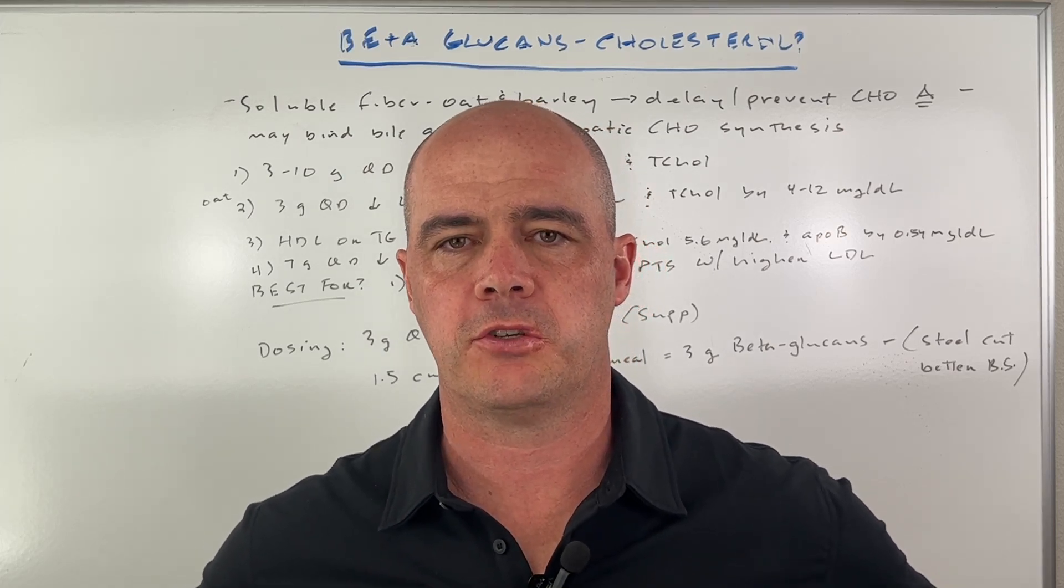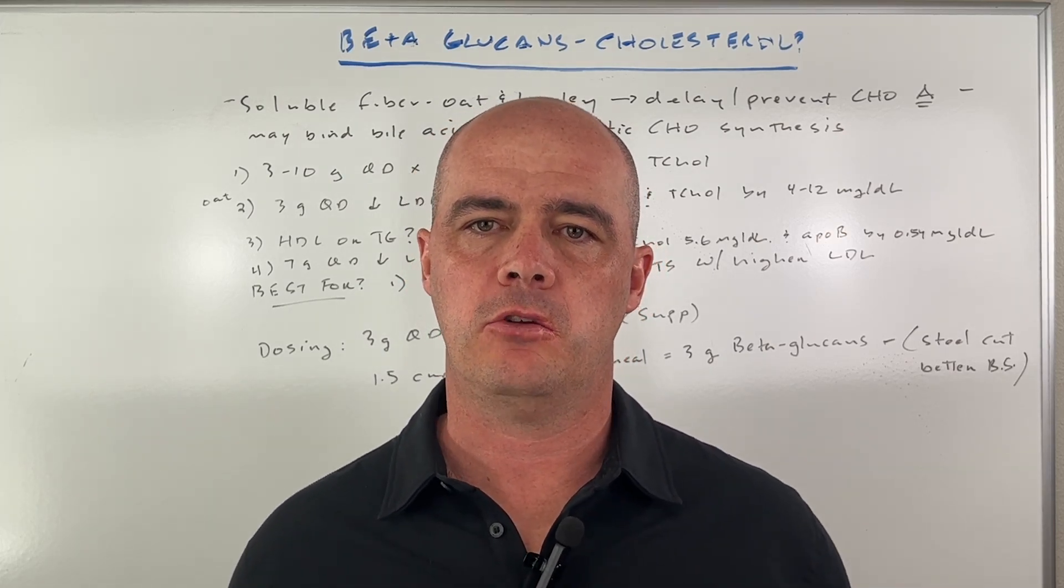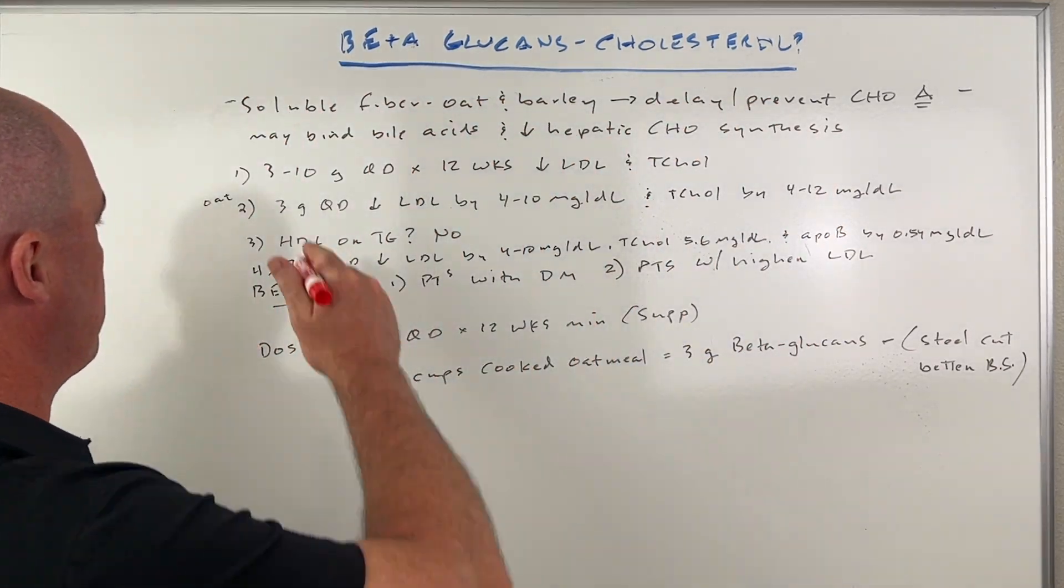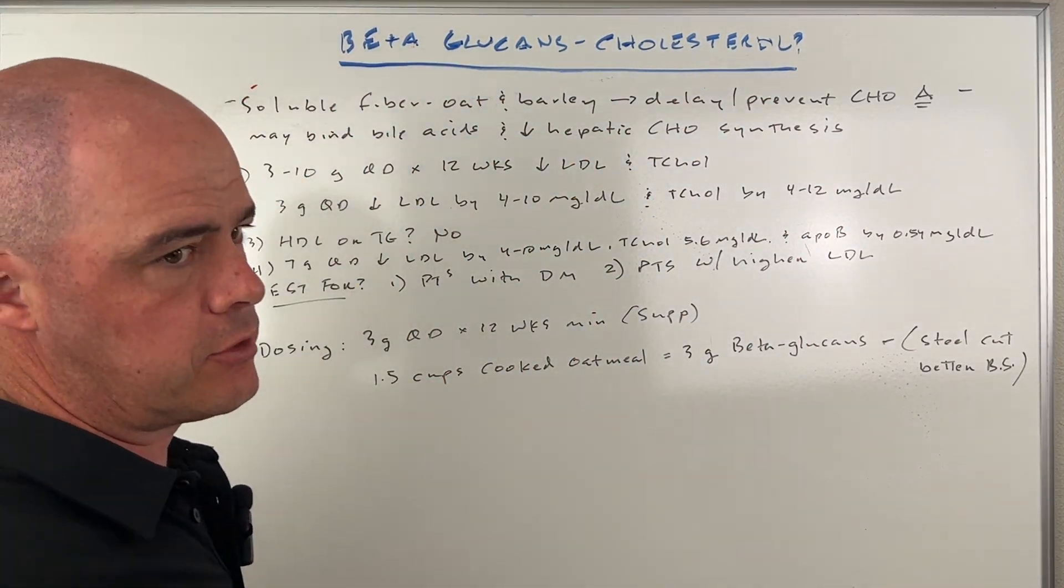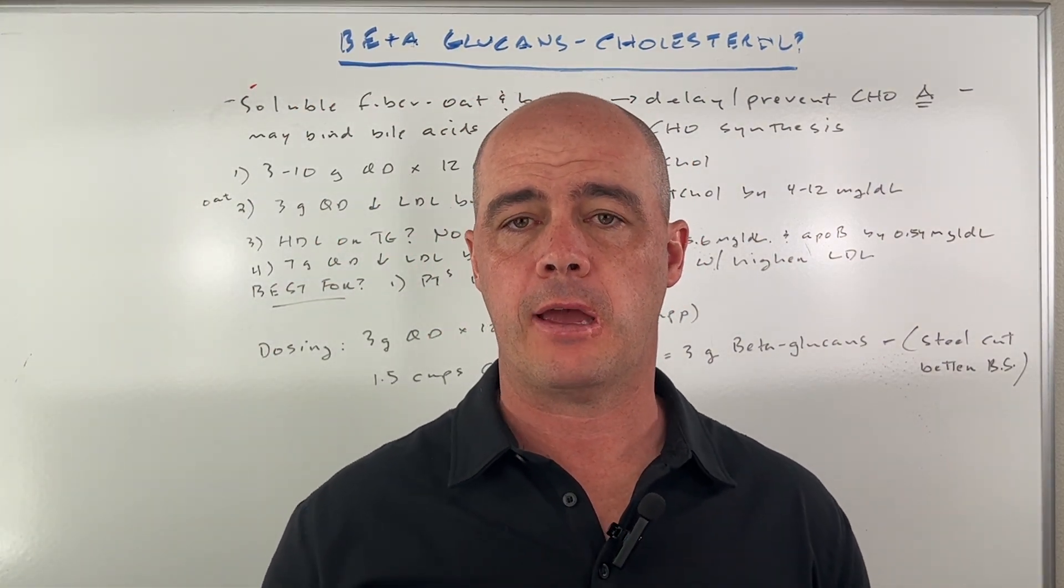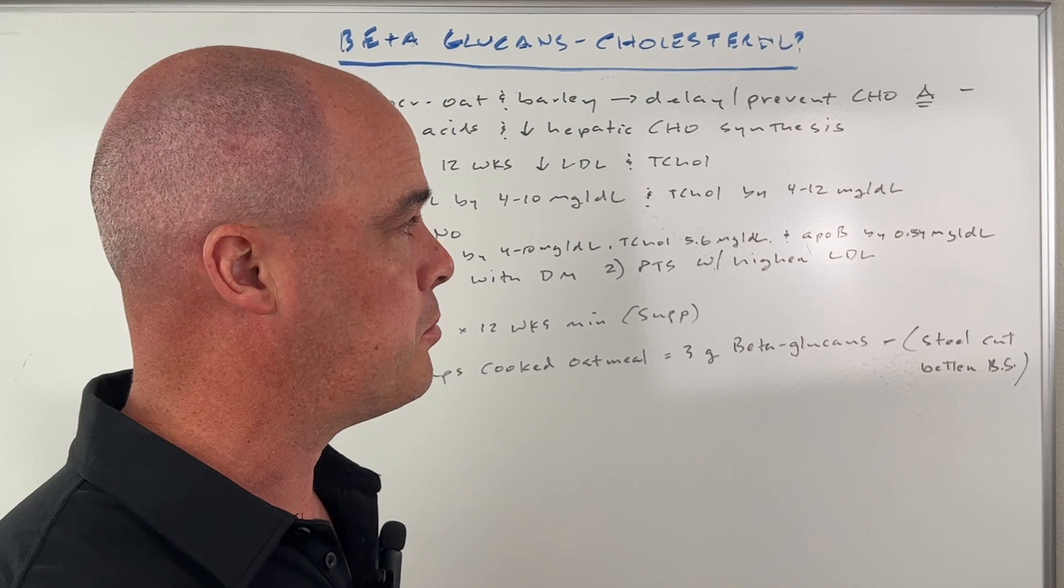Hey guys, Curtis Alexander. I'm a pharmacist. In this video, let's talk about using beta glucans to help lower cholesterol. First of all, beta glucans are soluble fiber that we primarily find in things like oats and barley.